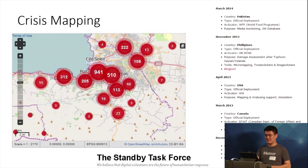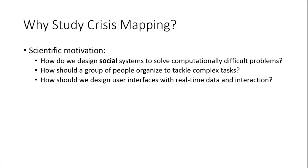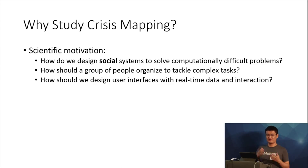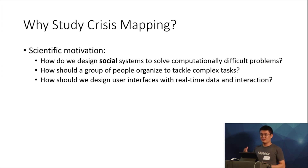In reality, the Standby Task Force — an organization that does much of this crisis mapping — hasn't deployed to very many natural disasters, because this is a really complicated task. It requires a lot of people to basically work with a lot of data at the same time and coordinate to produce this map, and it's a huge drain on their volunteers. So there's real value in figuring out how to do this more efficiently. Crisis mapping is basically a social system computing a problem that's hard for computers, and it requires people to actually organize themselves with real-time user interfaces.